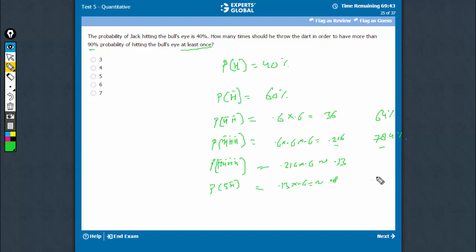Therefore, the probability of hitting at least once becomes 92%, which is more than 90%. Five attempts were needed, so the answer is 5.